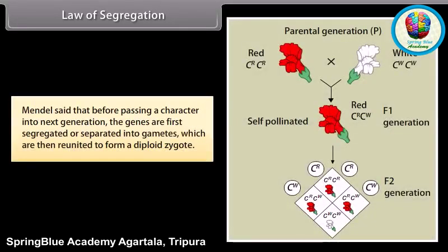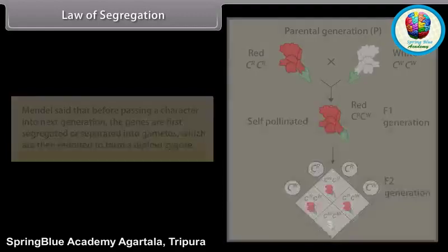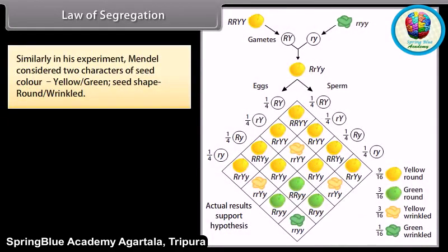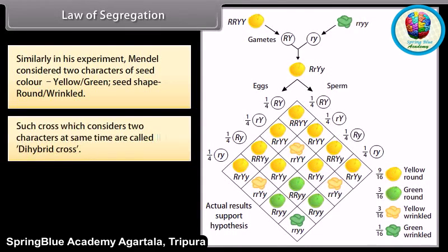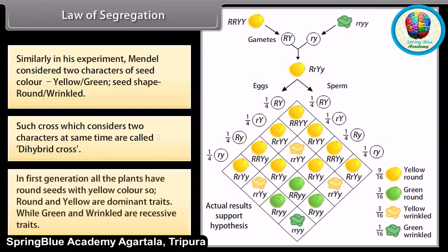Law of segregation. Mendel said that before passing a character into the next generation, the genes are first segregated or separated into gametes, which are then reunited to form a diploid zygote. Similarly, in his experiment, Mendel considered two characters — seed color (yellow and green) and seed shape (round and wrinkled). Such a cross which considers two characters at the same time is called a dihybrid cross. In the first generation, all the plants had round seeds with yellow color. So, round and yellow are dominant traits, while green and wrinkled are recessive traits.